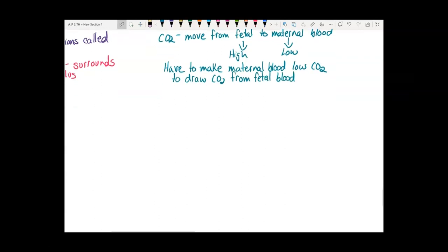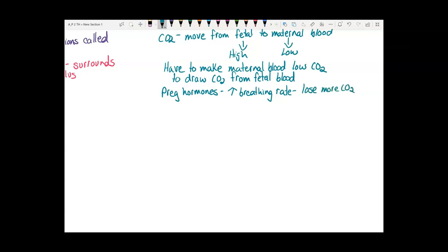To make the maternal blood low in carbon dioxide, the mother needs to breathe more. Every time you breathe, you lose carbon dioxide. So pregnancy hormones stimulate the mother to have a faster breathing rate, causing her to lose more carbon dioxide. This causes her blood to be low in CO2, which sets up the gradient for diffusion to draw carbon dioxide out of the fetal blood.